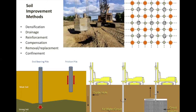This image shows something called dynamic compaction, where a weight of 10,000 to 40,000 kilograms is dropped in freefall from a height of usually 15 to 40 meters. This is done in a grid pattern, like you see to the right. Different colors represent different rounds of compaction — for example, orange might be the first pass, then gray, and then finally pale green.